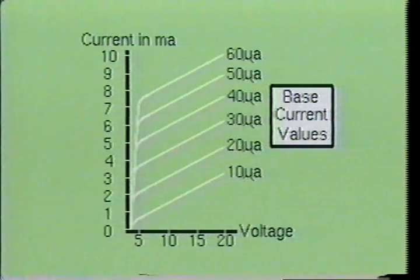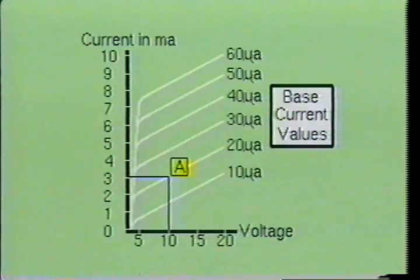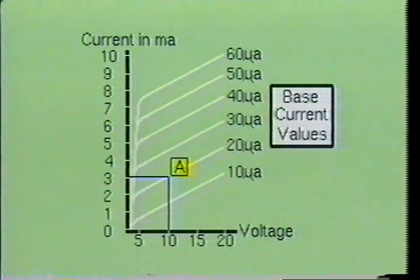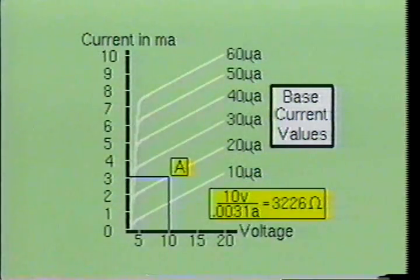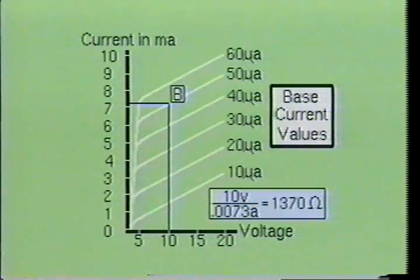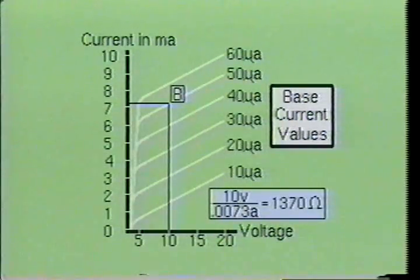Here we see a typical common emitter family of characteristic curves. At point A, the transistor will conduct a little over three milliamps of current and develop a 10-volt drop across the collector-emitter with a 20 microamp bias current being applied at the base. Using Ohm's law, R equals E over I, the transistor is developing a resistance of approximately 3,226 ohms. If the voltage drop across the transistor is held constant and the base current is increased to 50 microamps, the collector current will increase, meaning the transistor's emitter-to-collector resistance decreased when the base current was increased.